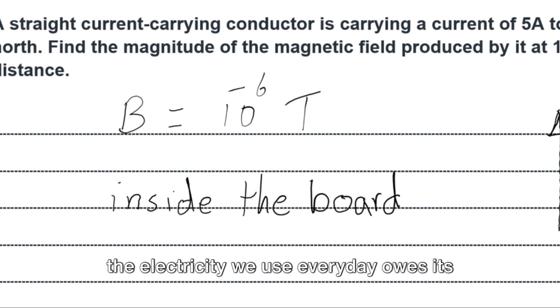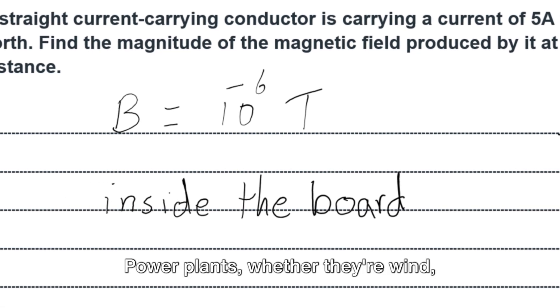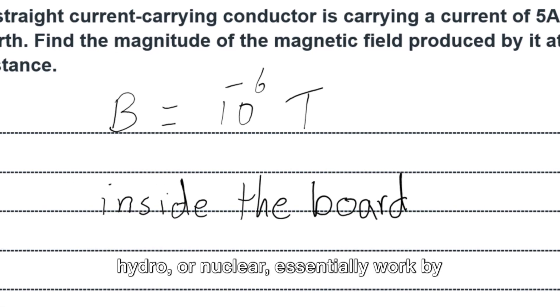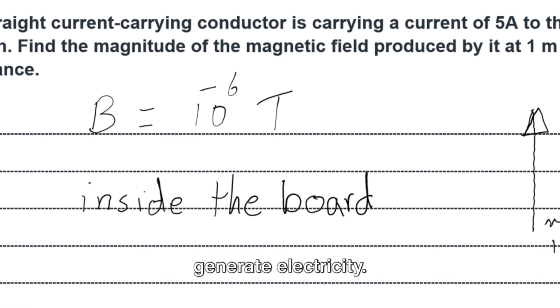Even the electricity we use every day owes its existence to this principle. Power plants, whether they're wind, hydro, or nuclear, essentially work by moving a wire in a magnetic field to generate electricity.